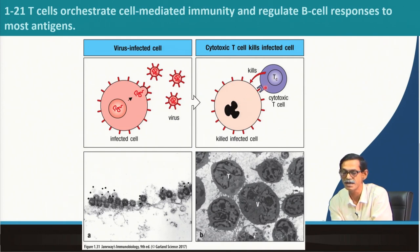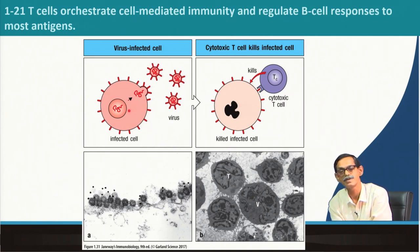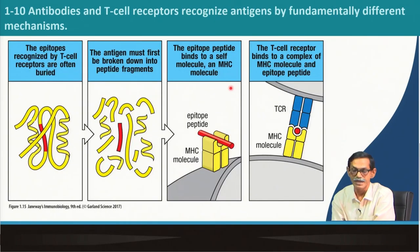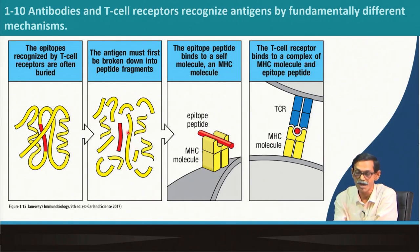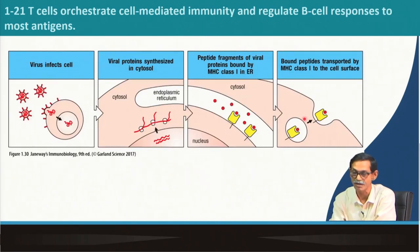To summarize: cytotoxic T cells recognize virus-infected cells and signal them to die. If the virus-infected cell dies, the virus inside also dies and cannot grow. This recognition is not simple though. The antigen is chopped into different pieces; one piece fits into the MHC, and this MHC-antigen complex is recognized by the T cell receptor. The virus-infected cell produces lots of protein inside the cytoplasm.